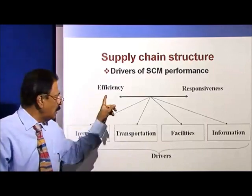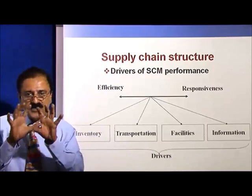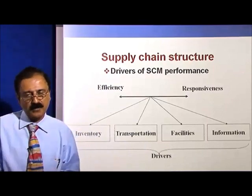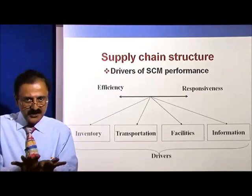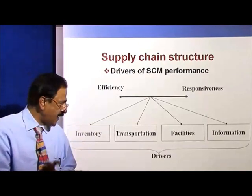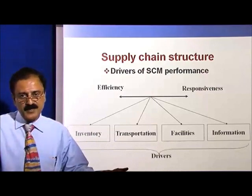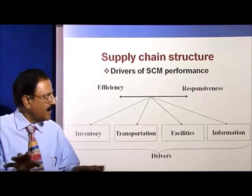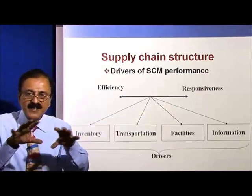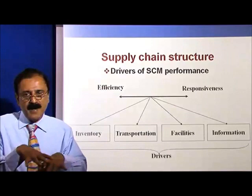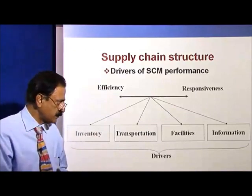Facilities: in the efficiency model, we spoke about cement plants, economics of scale, and few locations — so in that case you have only very few facilities. Unlike in the responsive stage, where you have several locations manufacturing several types of products.